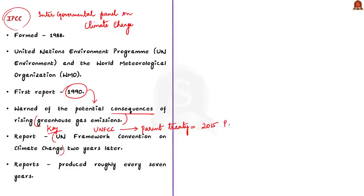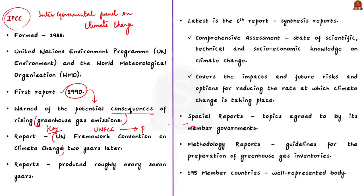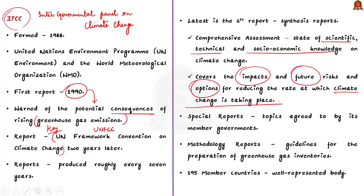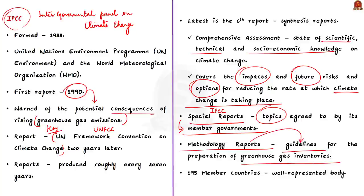Since then, reports have been produced roughly every seven years and the latest one is the sixth report. IPCC reports are called synthesis reports and are comprehensive assessments of scientific, technical, and socioeconomic knowledge on climate change, covering impacts, future risks, and options for reducing the rate of climate change. The IPCC also produces special reports and methodology reports providing guidelines for greenhouse gas inventories. It has around 195 member countries, making it a well-represented body.